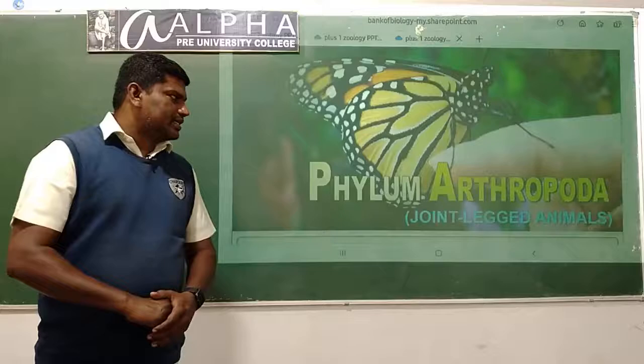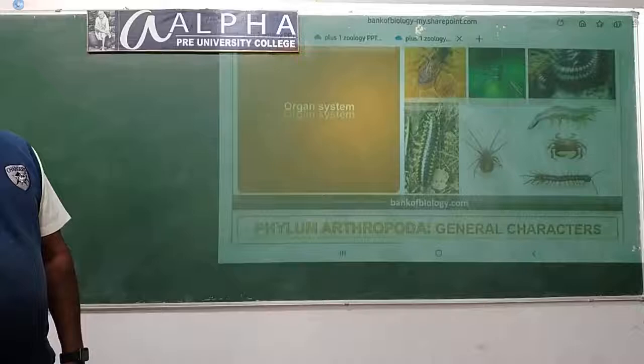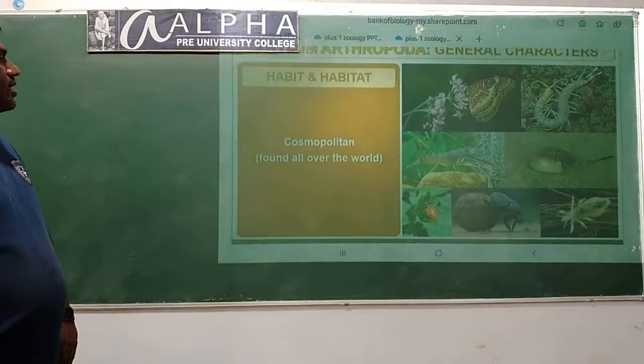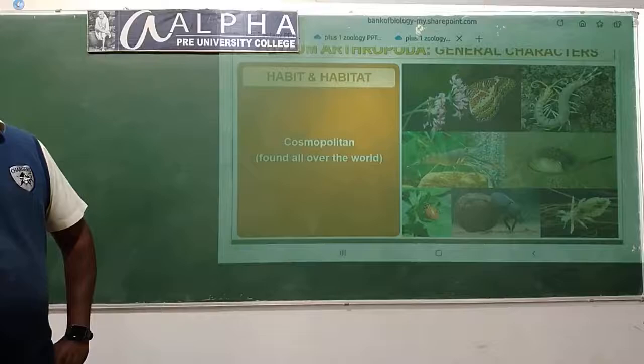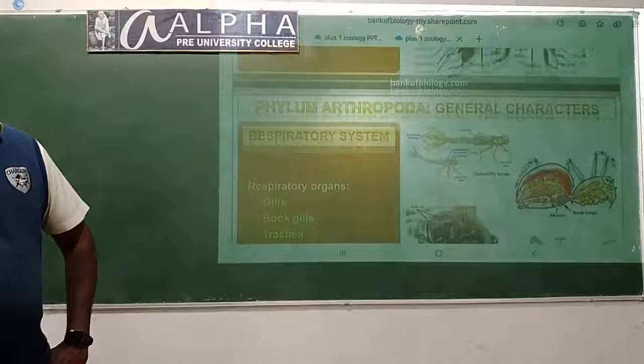Next is phylum Arthropoda, commonly called joint-legged animals. We see organ system level organization. They are bilaterally symmetrical, triploblastic, and coelomates. They are cosmopolitan in nature - found all over the world. It is the largest phylum in the animal kingdom. The digestive system is complete, consisting of two openings - mouth and anus.